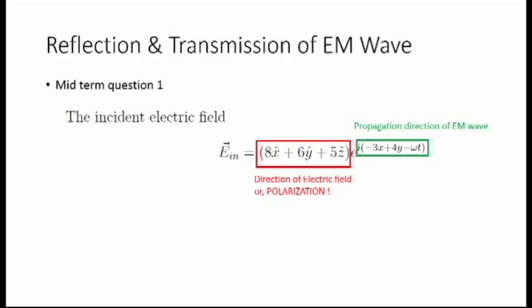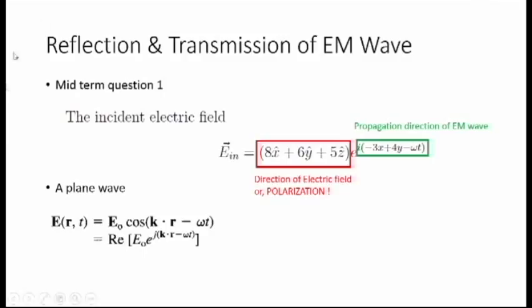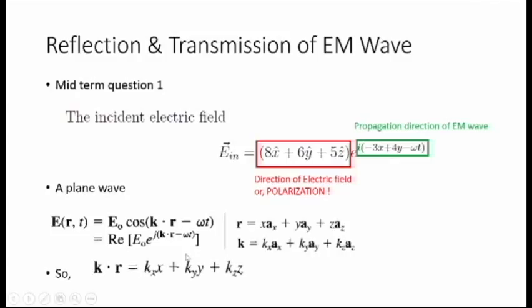The other part represents the direction of propagation of the electromagnetic wave. But how do we get this form of a propagating wave? It can be shown that a uniform plane wave takes the general form of this equation. The cosine is actually the real part of the exponential term. Here, r is the position vector and k is the propagation vector. k actually determines the direction of propagation of that plane wave. When you take the dot product of k and r, you get this kind of equation.